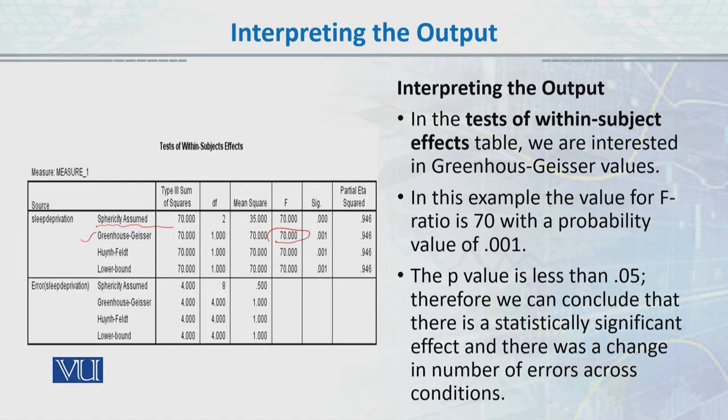The sum of squares value is given, and degrees of freedom is given. Our degrees of freedom is 2 because we have 3 levels: 24, 36, and 48 hours, so 3 minus 1 is 2. When we correct for sphericity not assumed, we reduce the degrees of freedom to 1. The mean square is 70, the F value is 70, and the significant value is less than 0.05. Therefore, we can conclude that there is a statistically significant effect. There was a change in the number of errors across conditions - as sleep deprivation period increased, the number of errors increased, and the results are significant.